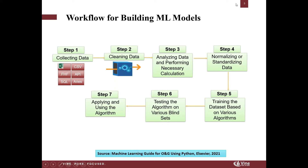Before going into that, I want to talk about the workflow. The first step in any machine learning model is to collect the data. A lot of companies have started to develop data warehouses — a central SQL data warehouse as opposed to having everything in Excel across different sources. At Vine, we have an on-premises SQL data warehouse that stores everything from geology, drilling, completions, and reservoir to production. We can pull data easily into a visualization dashboard such as Spotfire. That is step number one.